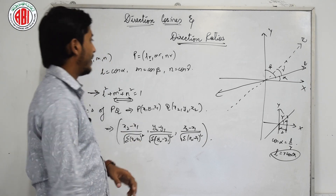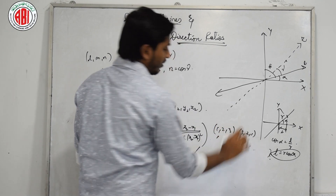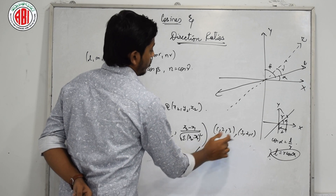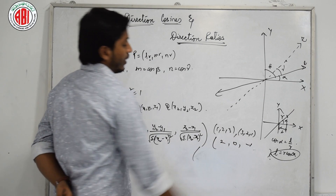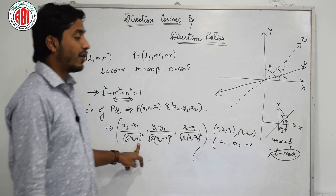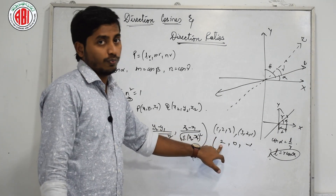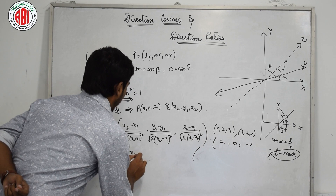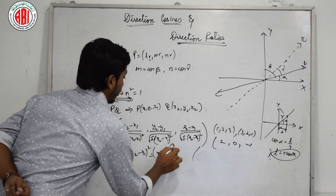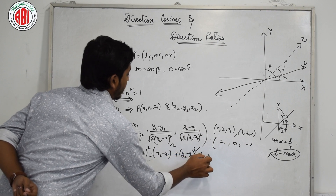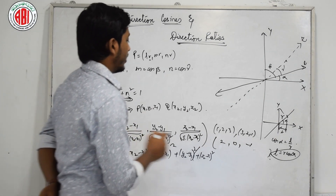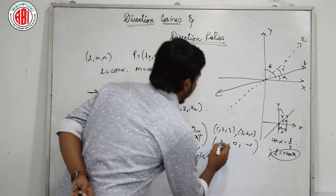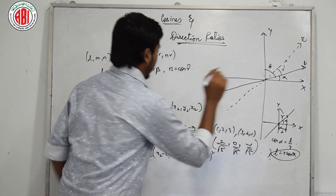For example, if there are two points (1, 2, 3) and (3, 2, 1), to find the DCs we subtract: 3 minus 1 is 2, 2 minus 2 is 0, 1 minus 3 is minus 1. The denominator is the square root of 2 squared plus 0 squared plus (minus 1) squared, which is the square root of 4 plus 0 plus 1, giving root 5. Dividing by root 5, this is how we find the DCs.